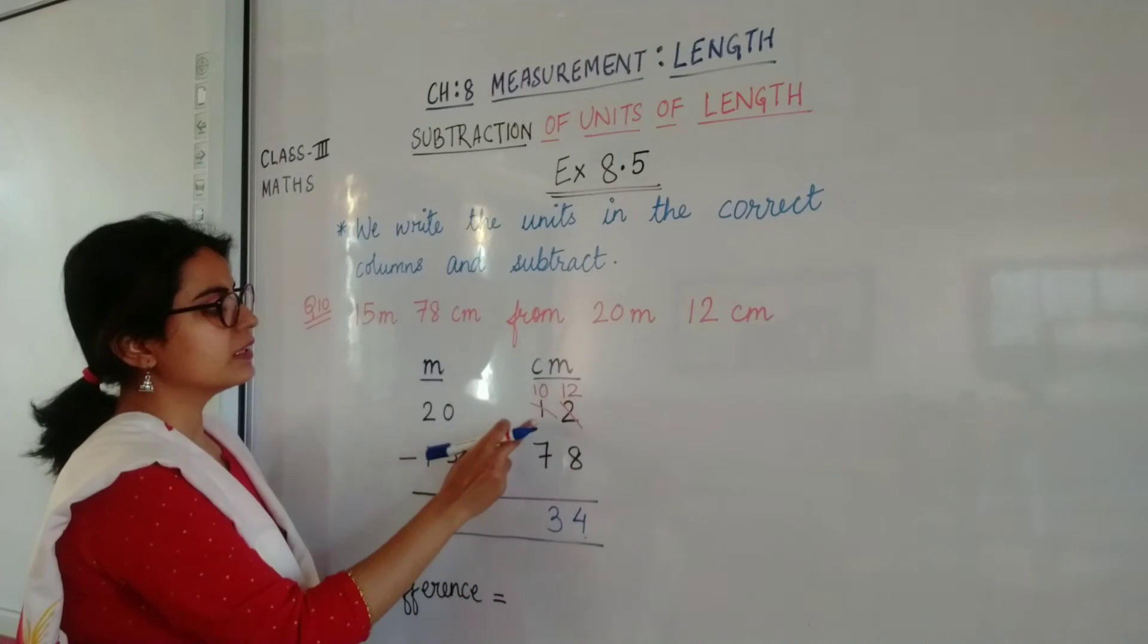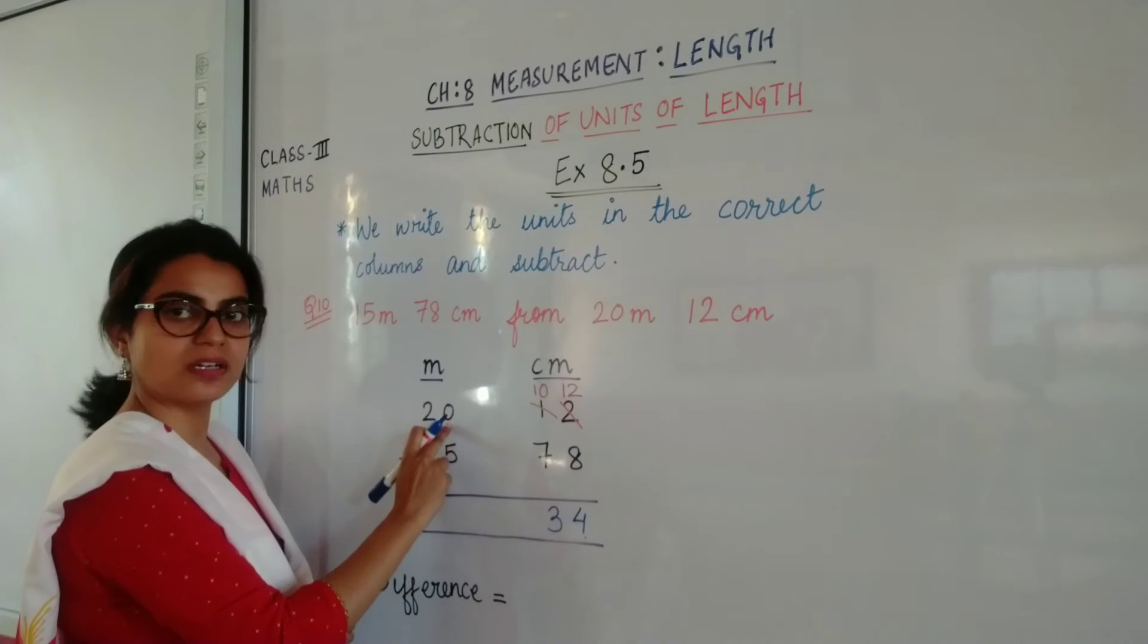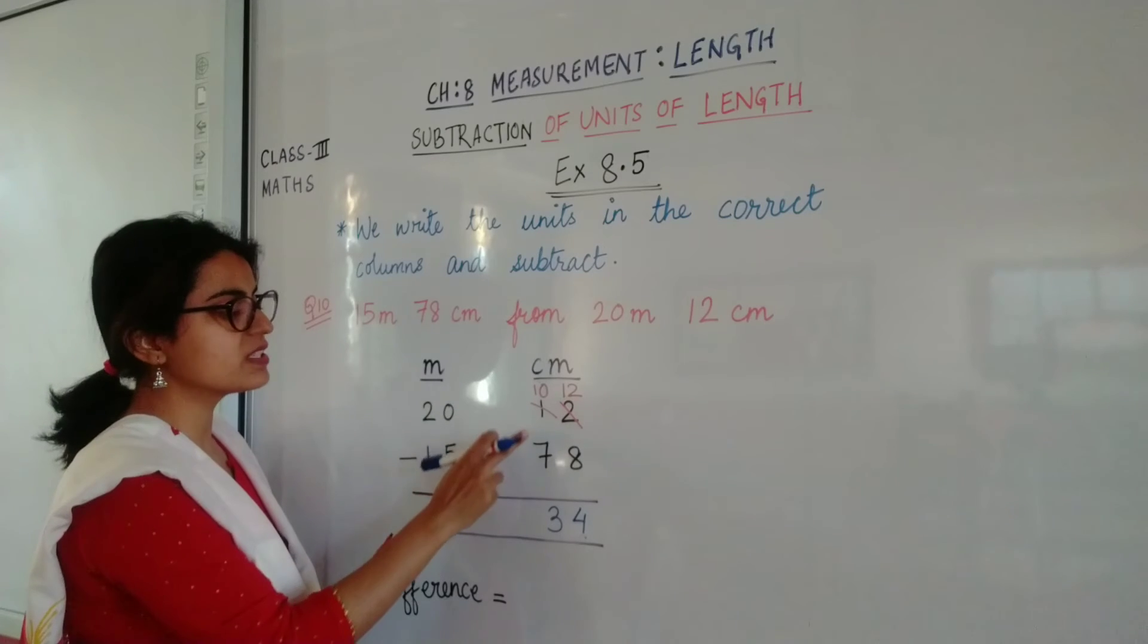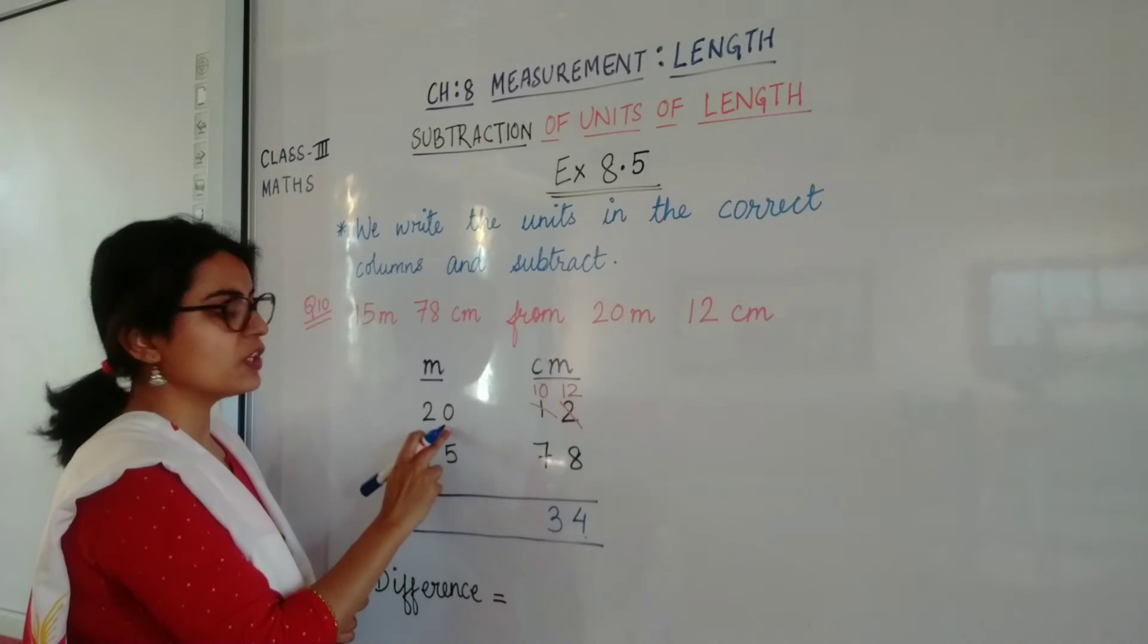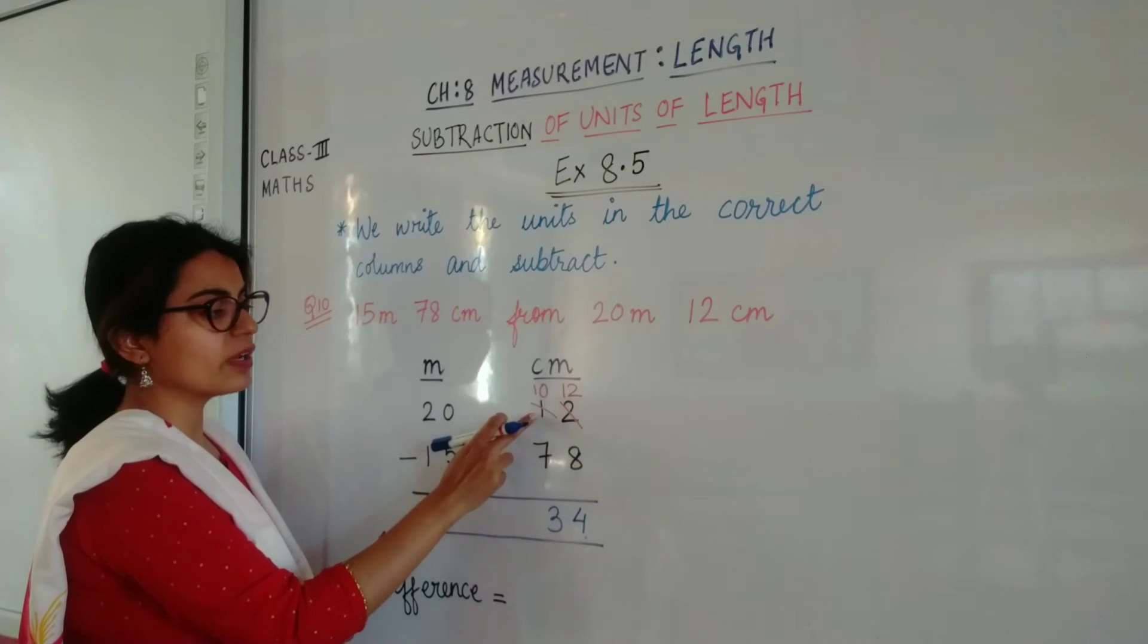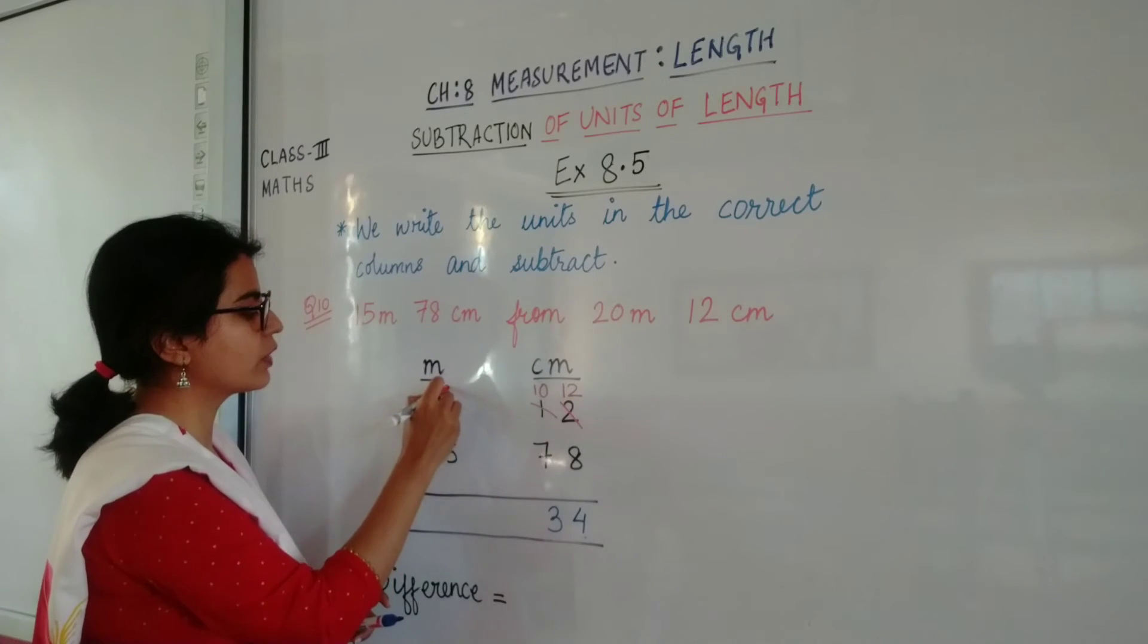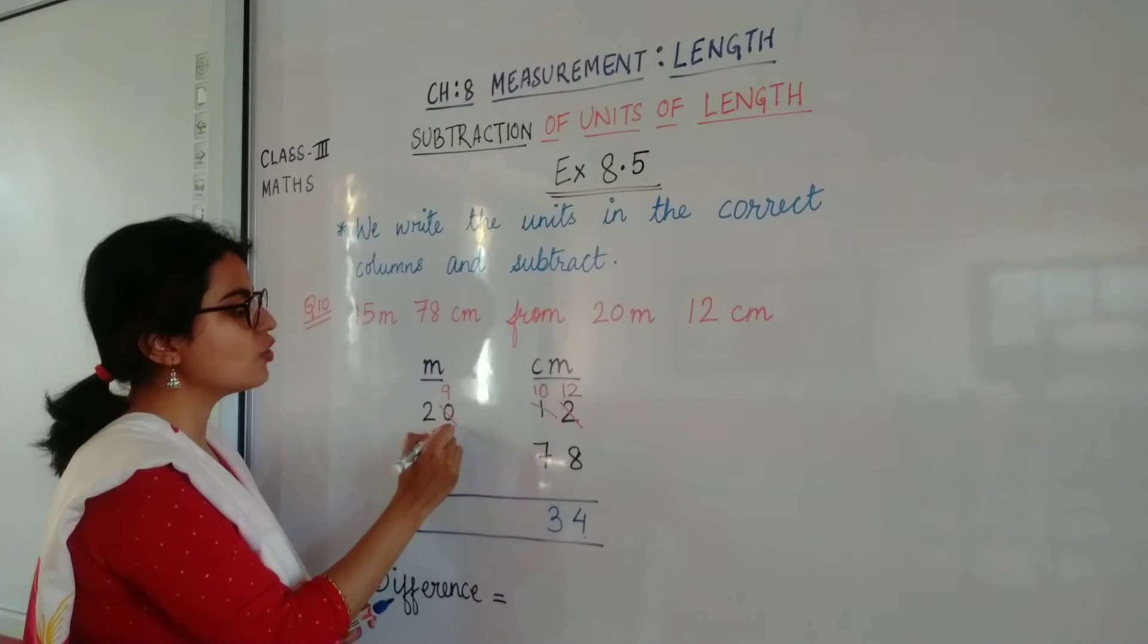Okay, this one has borrowed tens from here because yeh khud 7 se chota tha. 0 becomes 10, but it has already given 1 tens to 1, so it will become 9. And where did this 0 borrow 1 tens from? 2, yes.